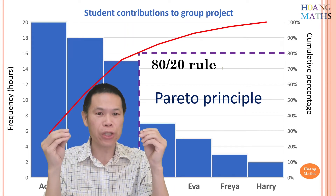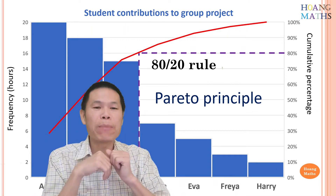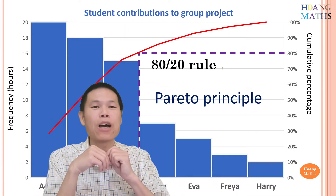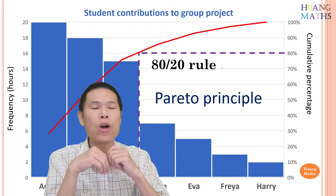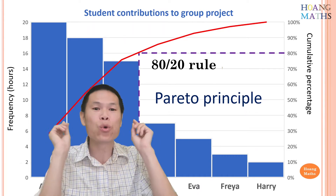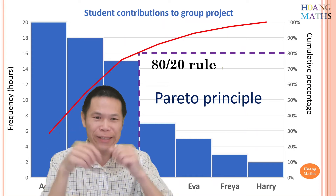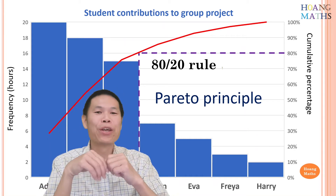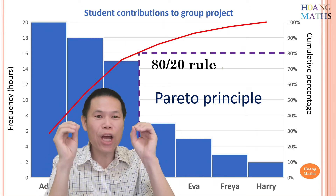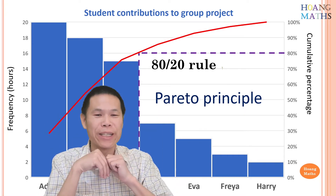Another example: at school you have lots of friends, however you spend 80% of your time with just a few close friends, who may make up 20% of your friends. And I think you'll like this one — in a group project, 20% of the group members do 80% of the work.